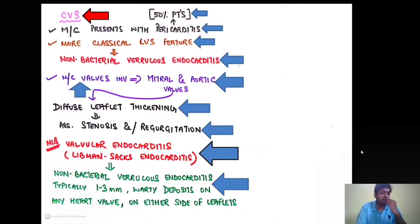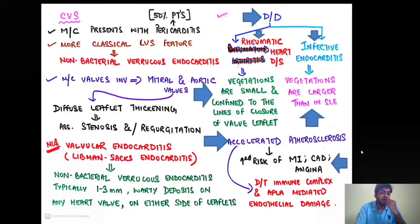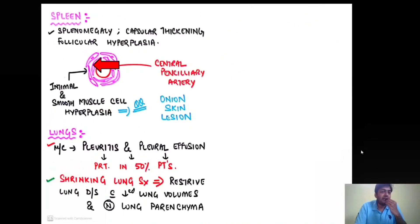The valvular endocarditis in SLE is called Libman-Sacks endocarditis — a non-bacterial verrucous endocarditis with typically 1–3 mm vegetations on any heart valve, on either side of the leaflet. In rheumatic heart disease, vegetations are small and confined along the line of closure, while in infective endocarditis they are far larger. SLE also predisposes to accelerated atherosclerosis, increasing the risk of myocardial infarction, coronary artery disease, and angina — due to immune complex-mediated endothelial damage.